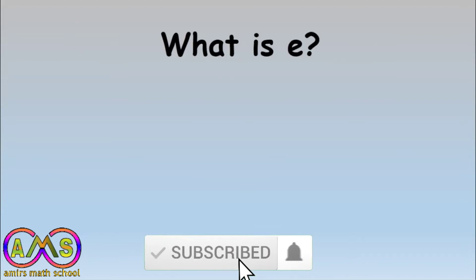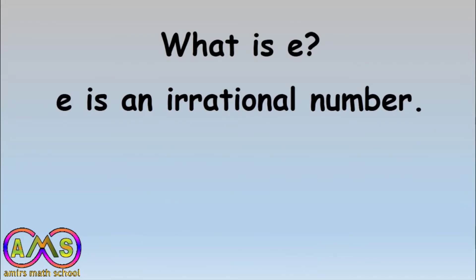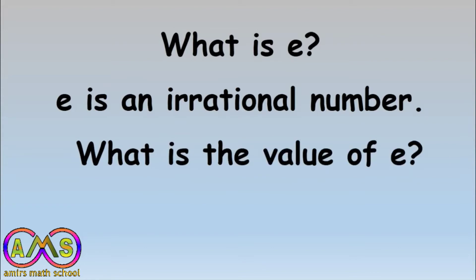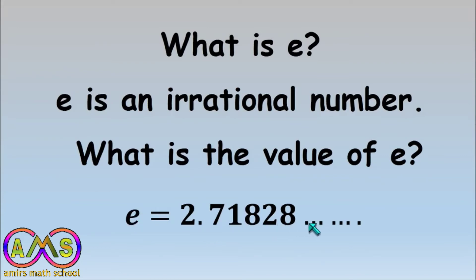Let's see what e is. The number e is an irrational number and is also known as a transcendental number. The value of e is equal to 2.71828 and so on — this value will never terminate. Since e is both irrational and transcendental, it is a non-terminating, non-repeating decimal number, which is why we call it irrational.